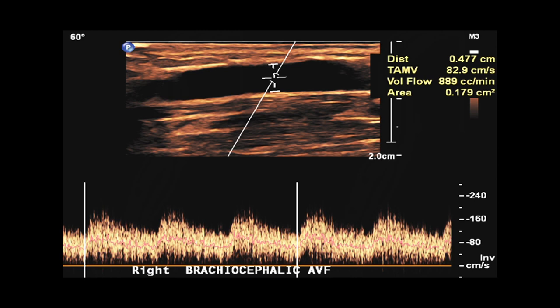Lastly, use the Doppler waveforms to measure volume flow in the mid-outflow vein. This image shows volume flow displayed for a brachiocephalic fistula.